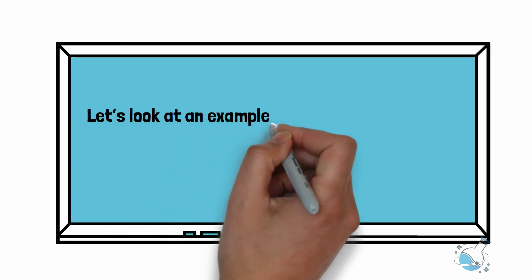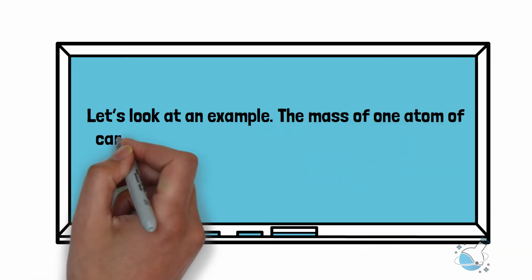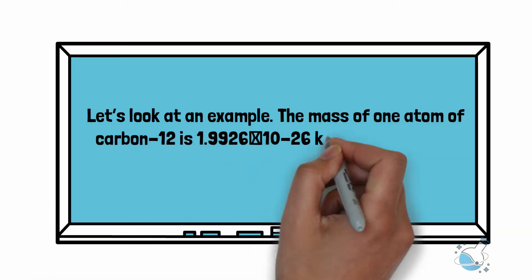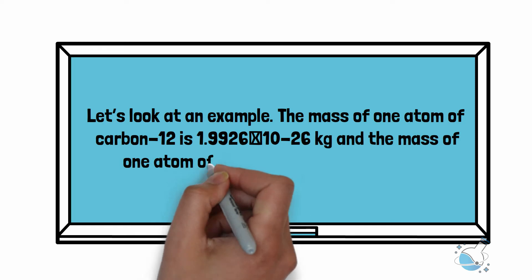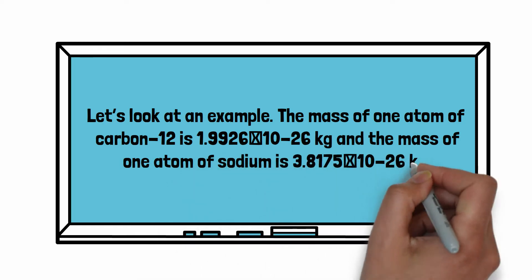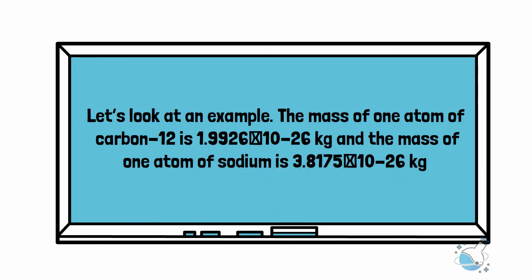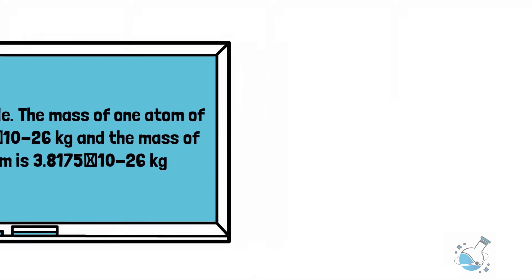Let's look at an example. The mass of one atom of carbon-12 is 1.9926 × 10^-26 kg, and the mass of one atom of sodium is 3.8175 × 10^-26 kg. After dividing, we get the relative atomic mass of sodium, which is 22.99.